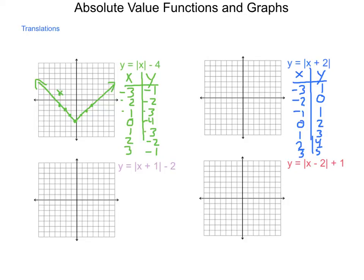Plotting the points: negative 3 comma 1, negative 2 comma 0, negative 1 comma 1, 0 comma 2, 1 comma 3, 2 comma 4, and 3 comma 5. We connect the right side, and the left side extends in that direction. By having this item inside of our absolute value symbol, the result is a horizontal translation. What does it take to make inside the group 0? The answer is negative 2 — and our vertex is located at negative 2, 0.